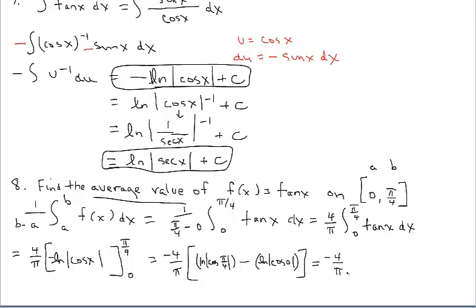-4/π times... let's see. Cosine of π/4 is √2/2, so we have ln(√2/2). Notice I dropped the absolute value - cosine of π/4 is already positive. Cosine of 0 is 1, and ln(1) = 0, so this is minus 0. Here's my answer.